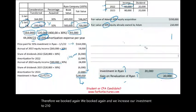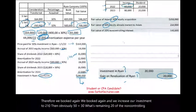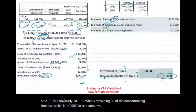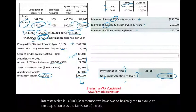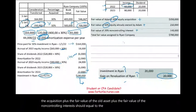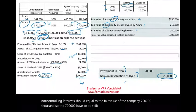50% plus 30% leaves 20% for the non-controlling interest, which is $140,000. The fair value of the new acquisition plus the fair value of the old investment plus the fair value of the non-controlling interest should equal the fair value of the company — $700,000. The $700,000 is split between those three figures.